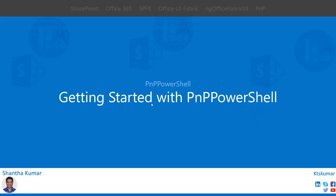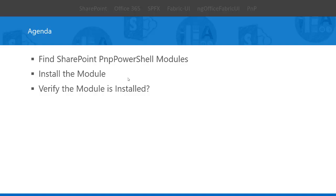Hello everyone, myself Santakumar. In this video we are going to see how to install the PNP PowerShell module for SharePoint. First we are going to find the module names for different environments from the PowerShell gallery, then install it to your client machine, and then we will run the command to get the installed PNP PowerShell module on the machine.